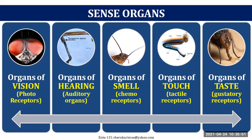Insects are very brilliant organisms. They have different kinds of organs — not just one but many. That is the beauty of insects, and that's the reason insects are really successful on this earth. We already know that insects have very well-developed compound eyes as organs of vision.